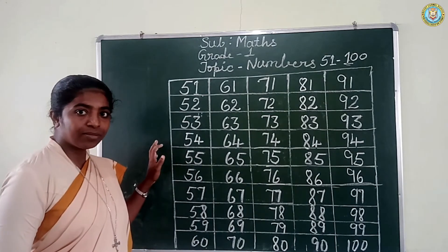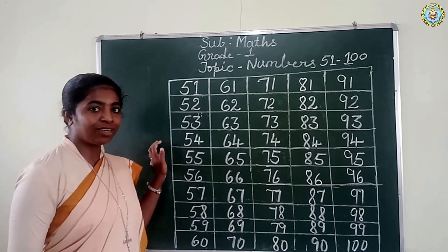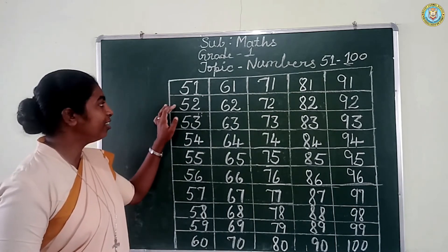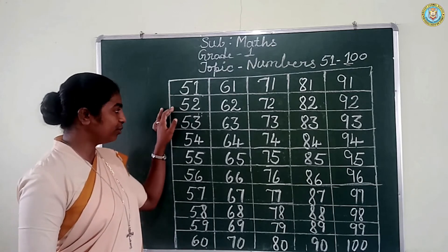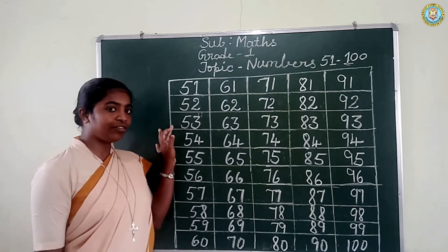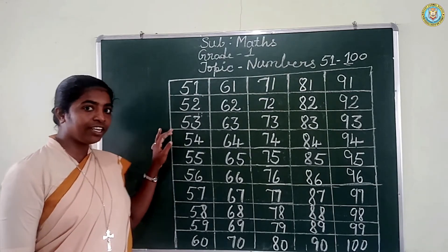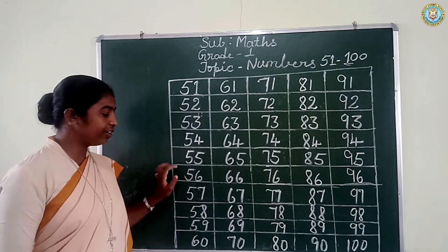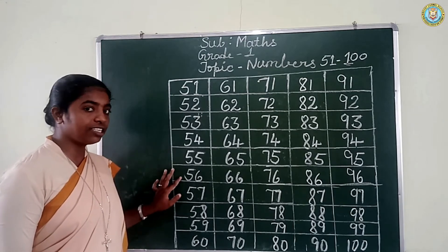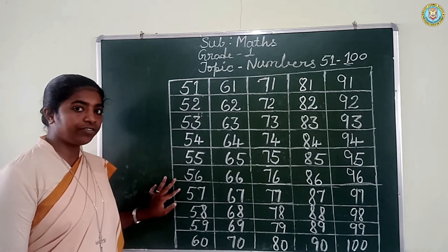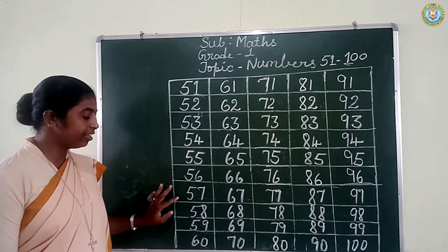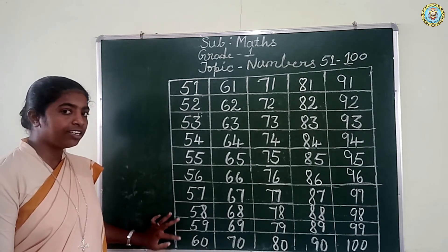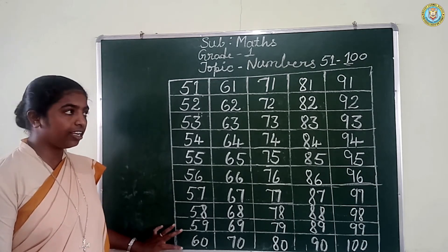Repeat the numbers after me. 51, 52, 53, 54, 55, 56, 57, 58, 59, 60.